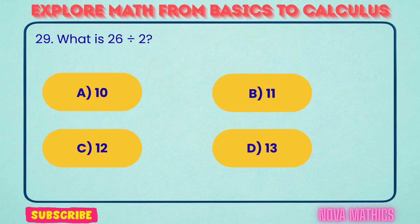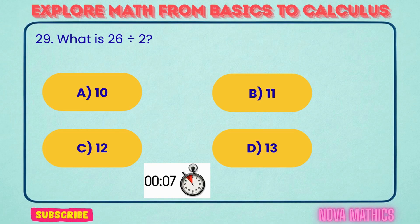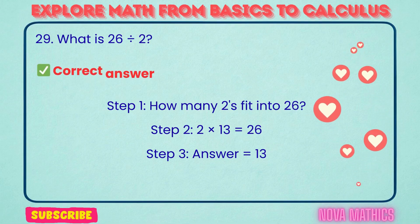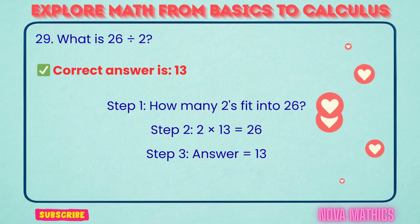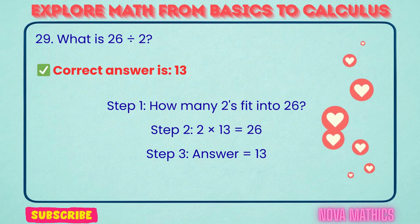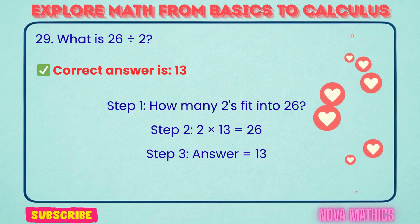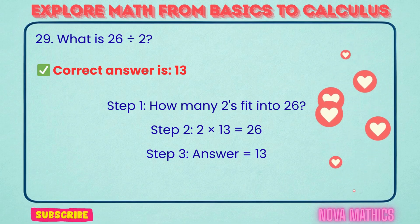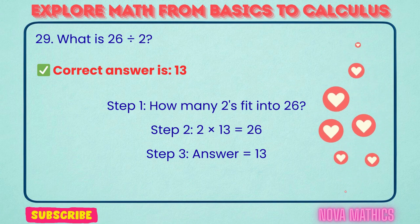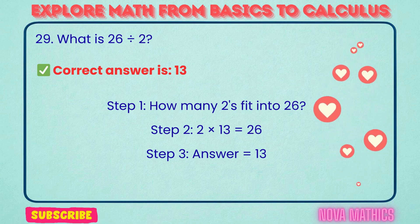29. What is 26 divided by 2? Correct answer is 13. 26 divided by 2 equals 13. We find this because 2 times 13 is 26.